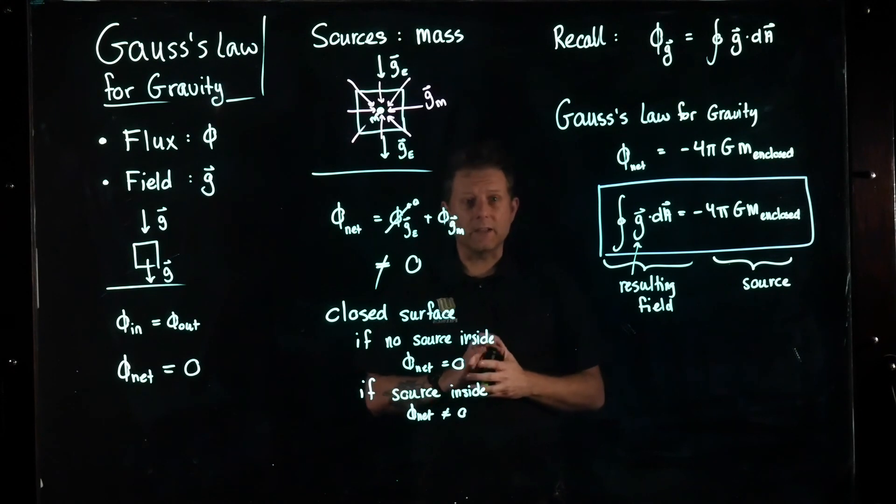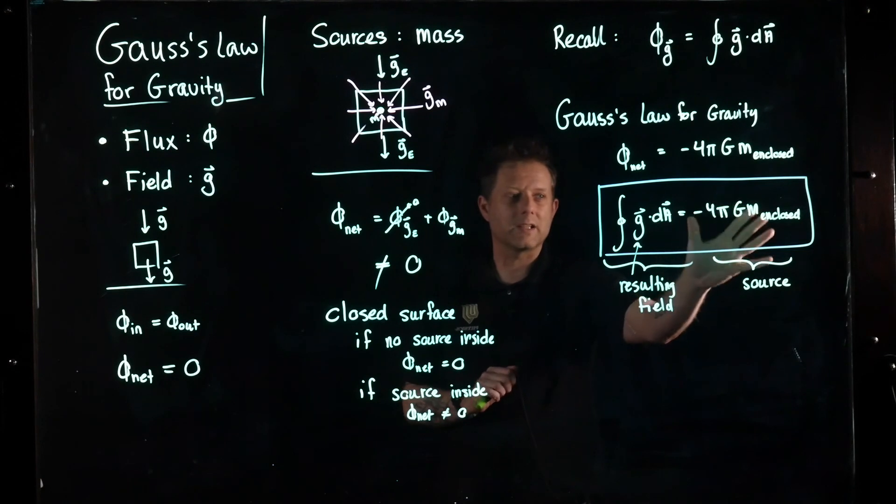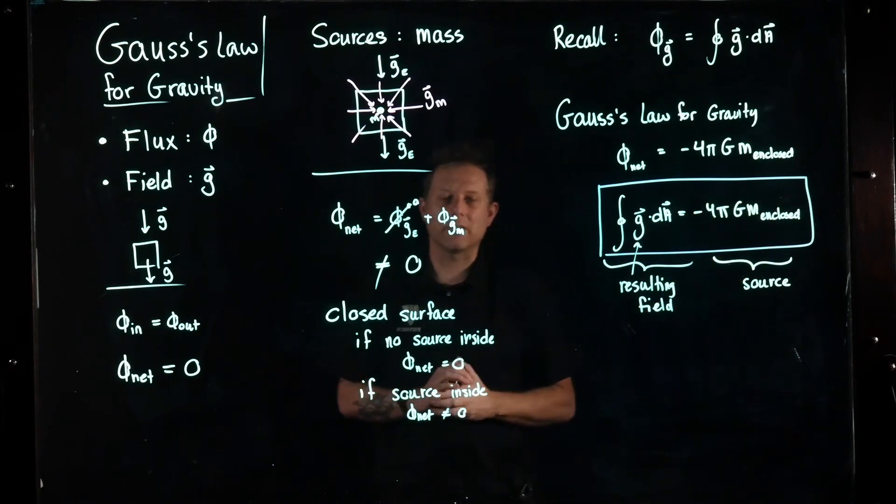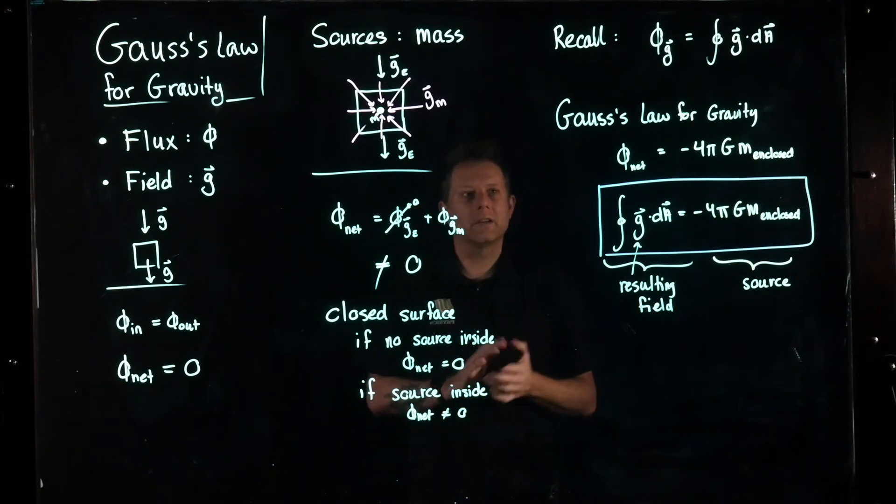For the magnetic field, we don't have a source, so this one is going to look slightly different. This is going to be zero, but otherwise, we have a similar Gauss's Law for magnetic fields. So this is the theory we need in order to proceed with the flux field of source calculations, and we will take those in different videos.